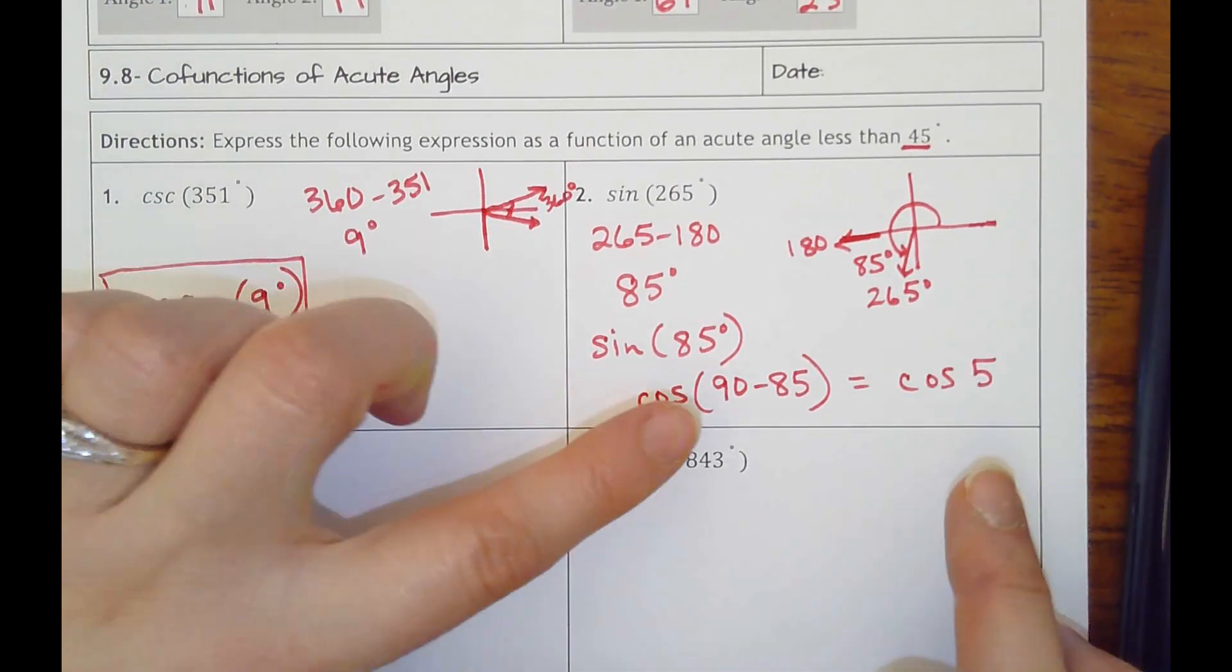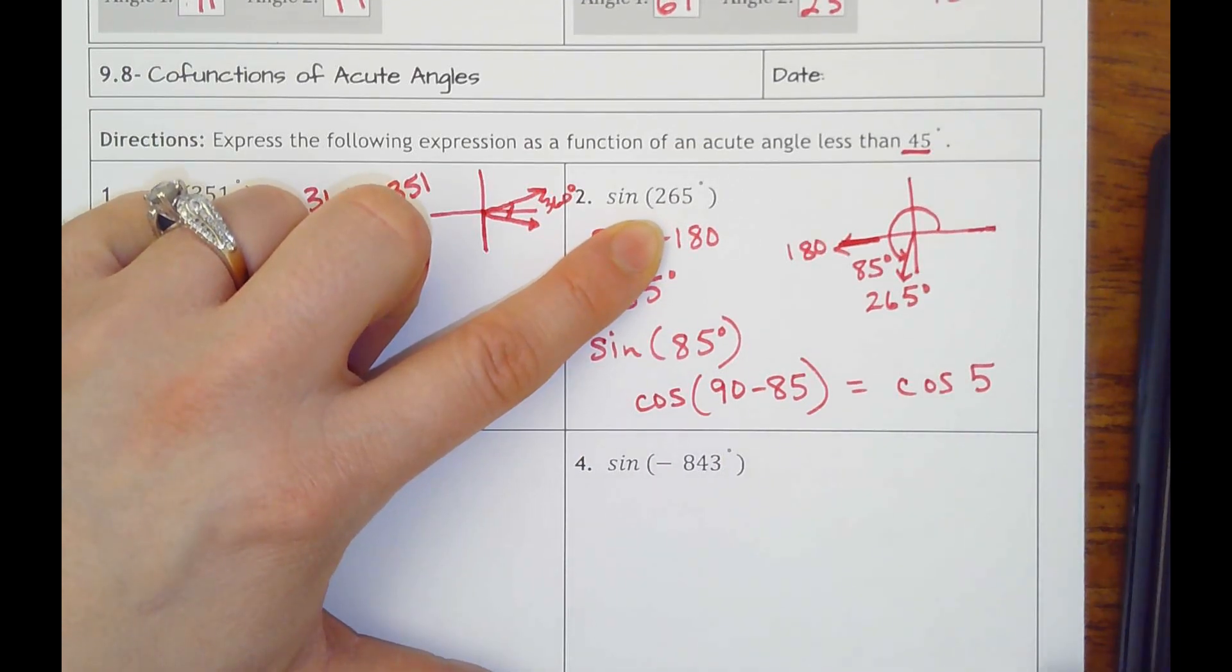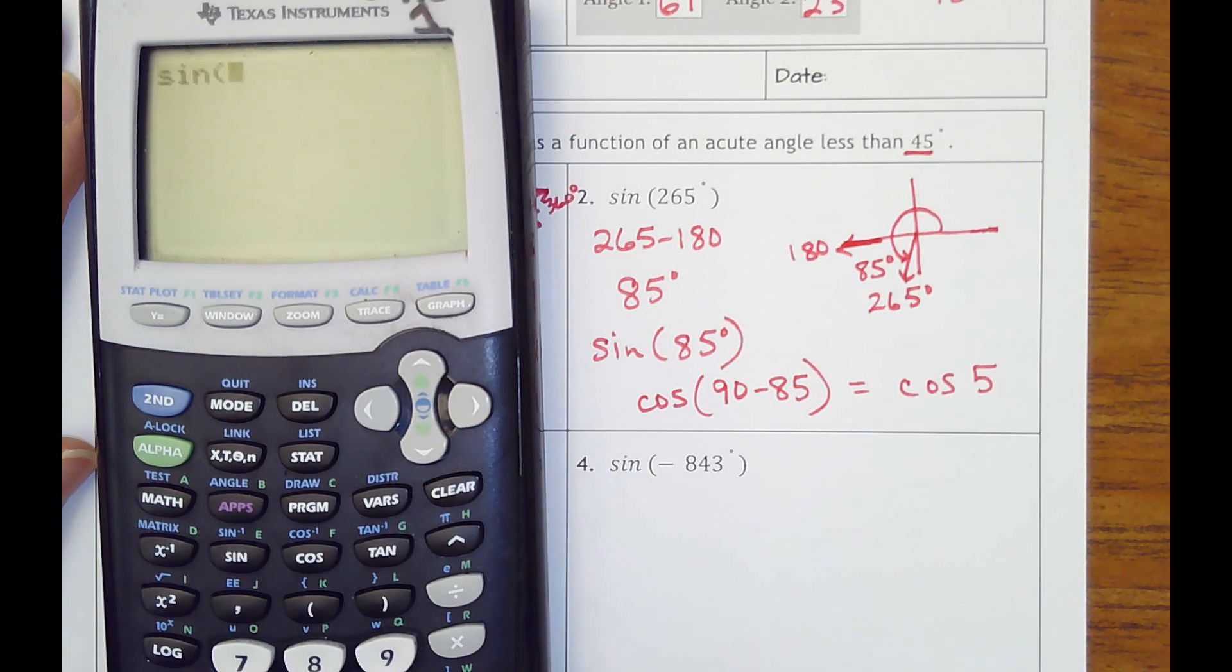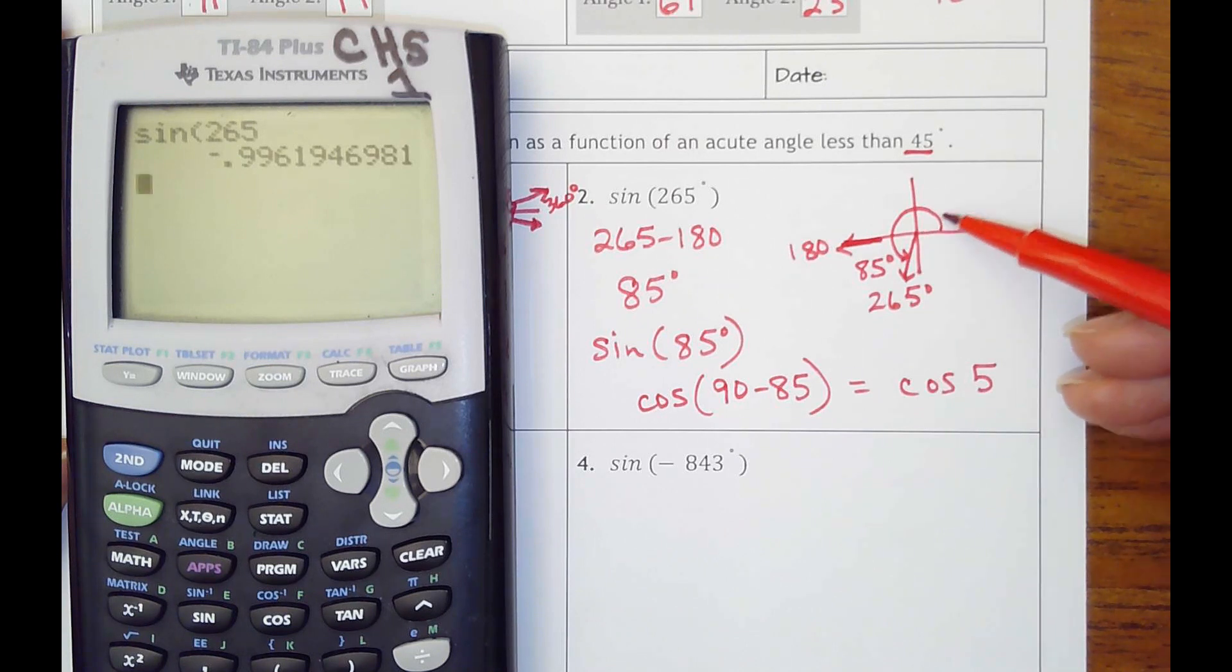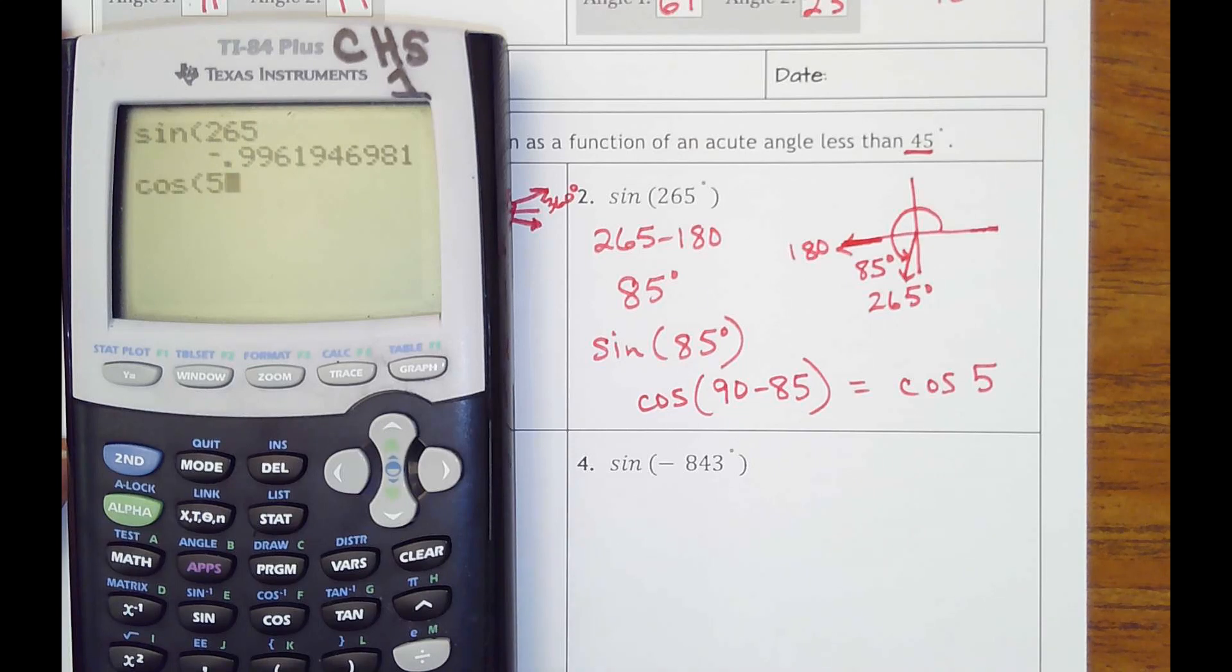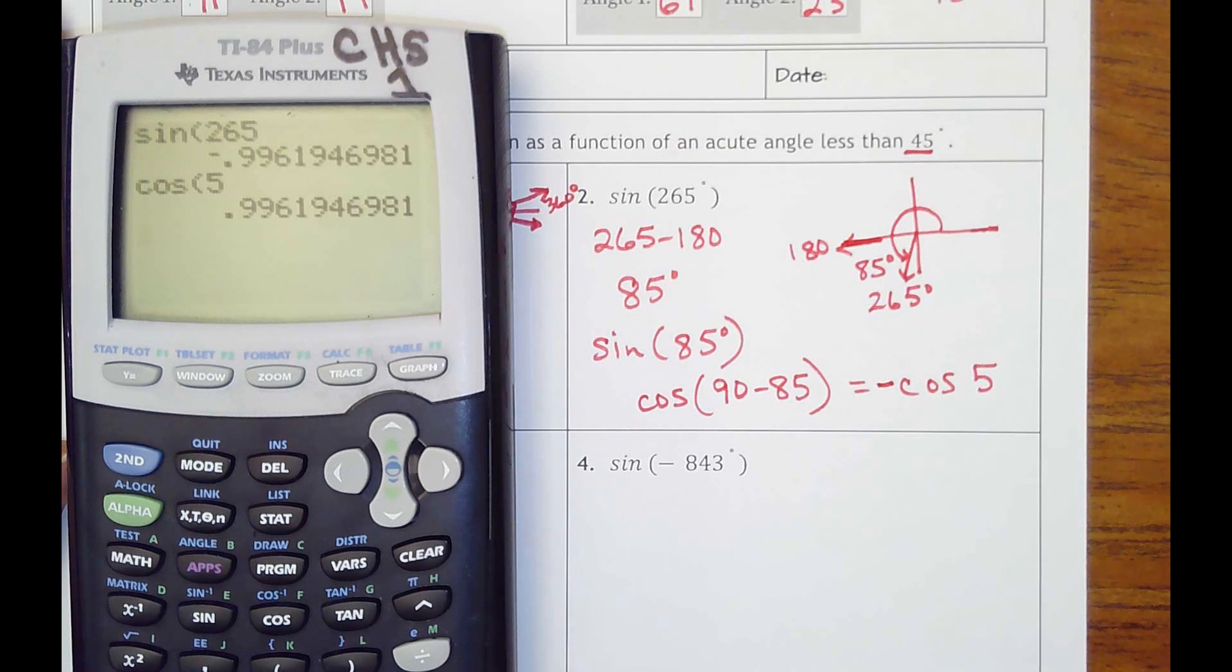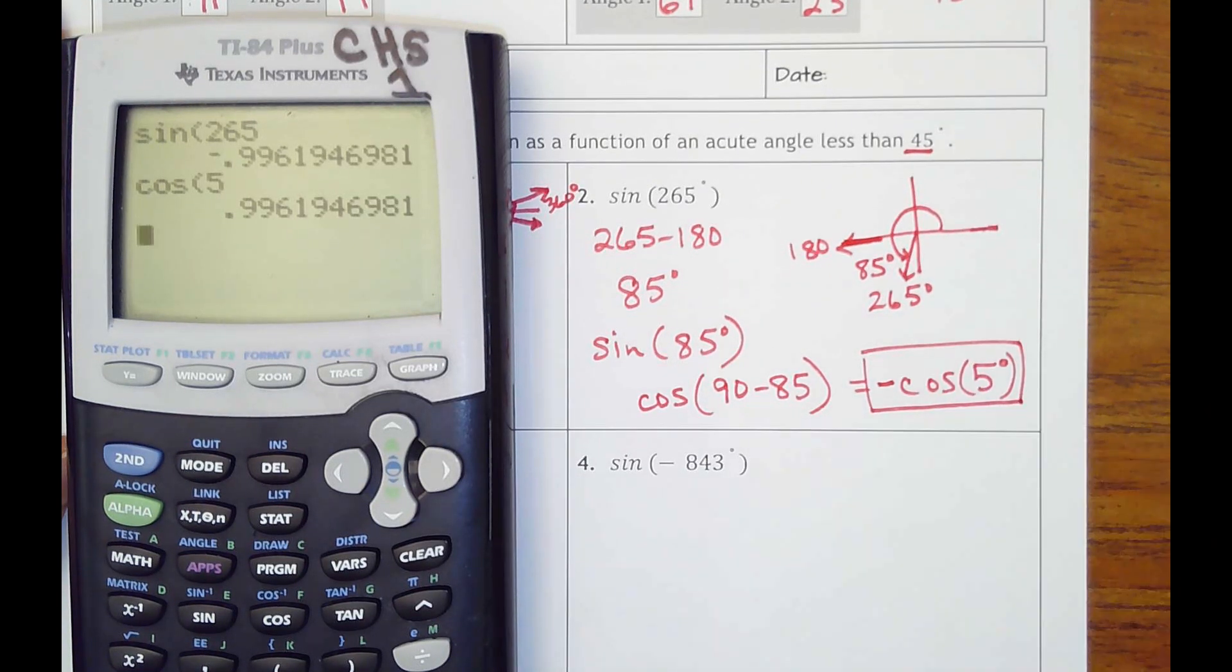But I need to see, I can even try it from the beginning. I need to see if this and this get the same sine value. Let's check. So sine of 265, that is a negative, which makes sense because I'm down here in quadrant 3. Cosine of 5, 5 degrees is going to be here in quadrant 1. So I know that's going to be positive. So I need to make it actually be negative to match. So I'll just have to put a negative in front.